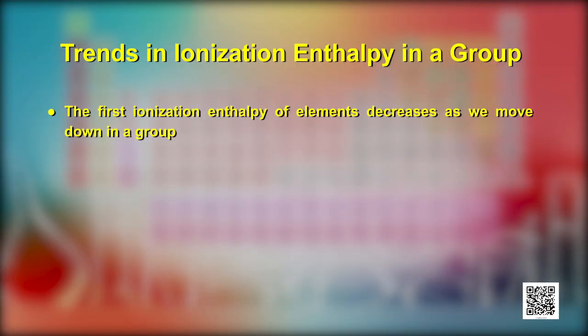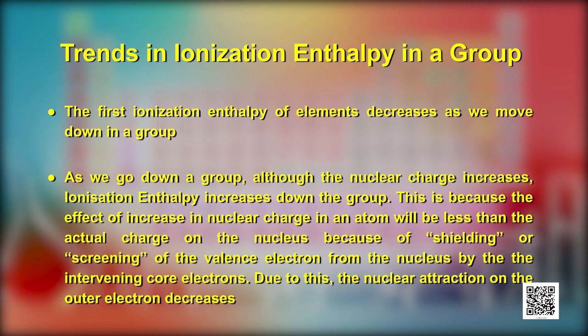The first ionization enthalpy of elements generally decreases as we move down a group. Looking at group 1 elements, ionization enthalpy decreases from lithium to caesium. Although the nuclear charge increases going down a group, the effect of increasing nuclear charge on electrons is less than the actual charge on the nucleus due to shielding or screening of valence electrons from the nucleus by the intervening core electrons. This reduces the nuclear attraction on the outer electron, making it easier to remove, so ionization enthalpy decreases down the group.